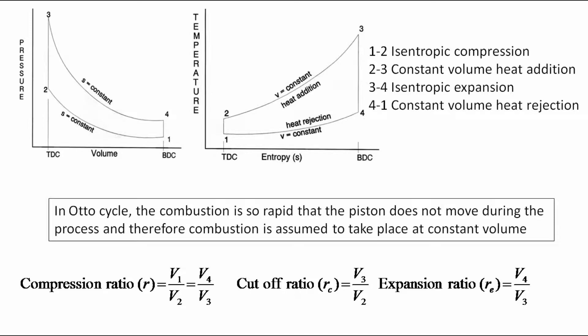From the definition we have already discussed earlier, compression ratio r is equal to V1 by V2 and also equal to V4 by V3. Cut off ratio rc is equal to V3 by V2. Expansion ratio re is equal to V4 by V3.